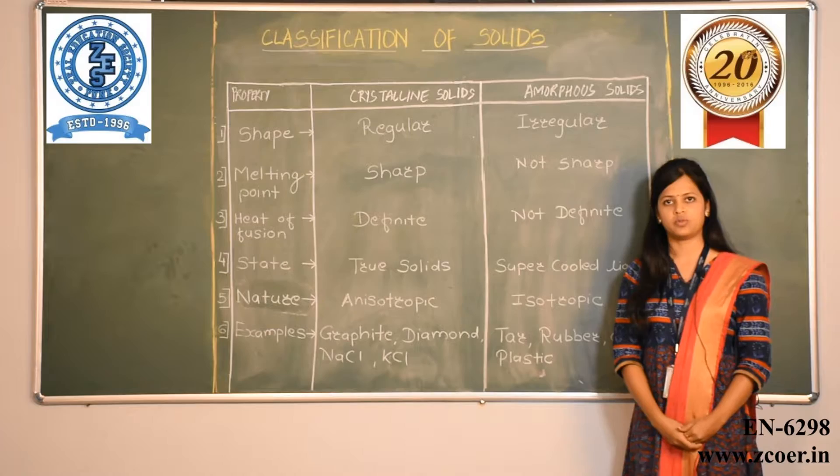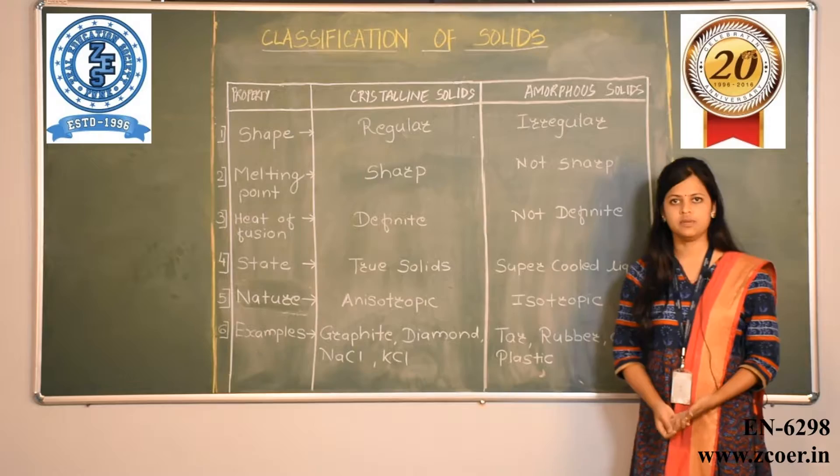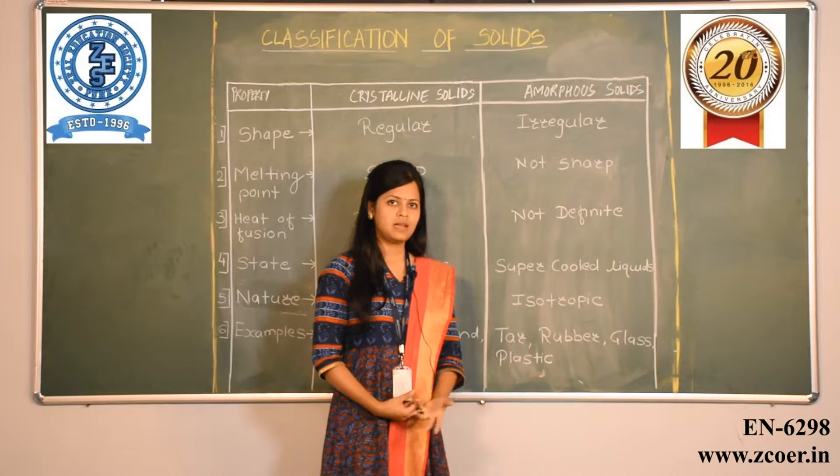Examples of crystalline solids are graphite, diamond, NaCl (sodium chloride), and KCl (potassium chloride). Examples of amorphous solids are tar, rubber, and plastic.